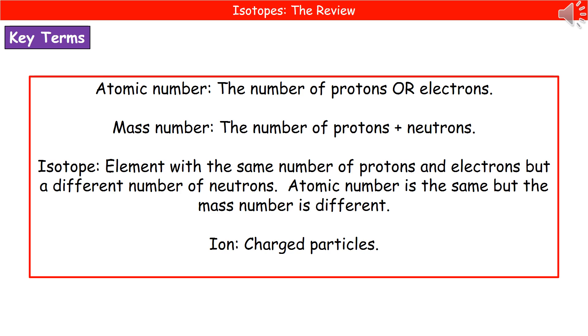So what we find in any isotope, the atomic number is always the same, but the mass number is different. Because the protons and electrons are the same, but the neutrons is different.